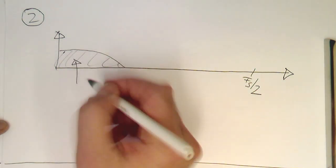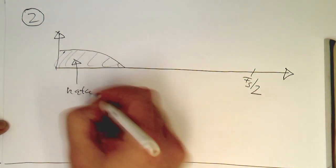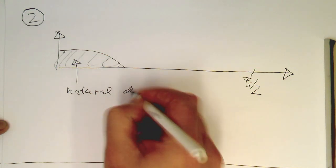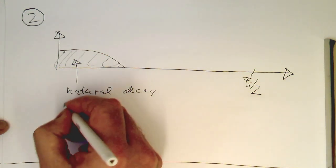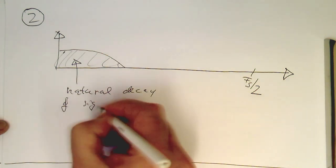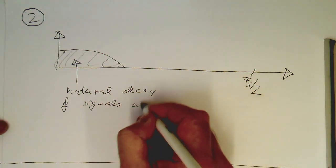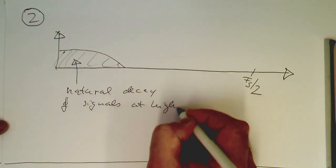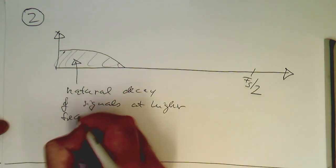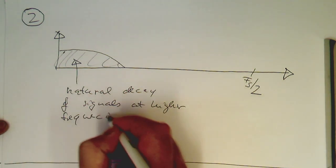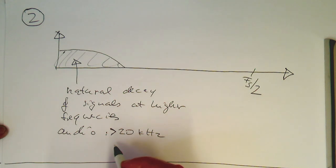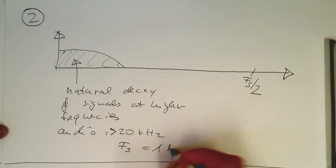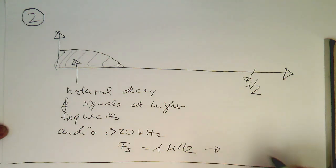So we just use the natural decay of signals at higher frequencies. So for example, in audio, there's virtually nothing above 20 kilohertz. So if we set fs, for example, to 1 megahertz, then obviously we don't need any anti-alias filtering.